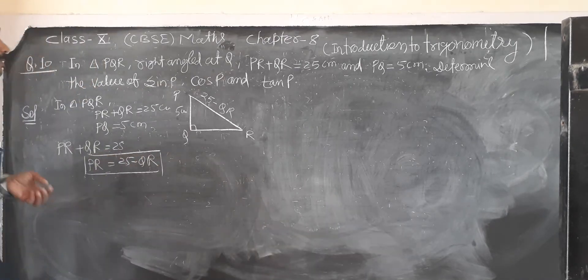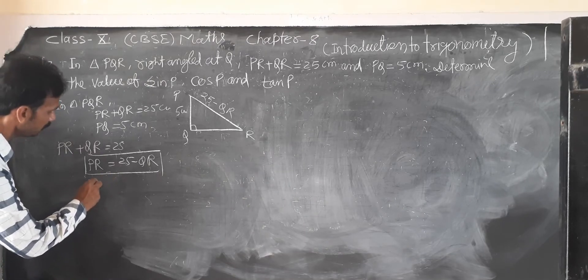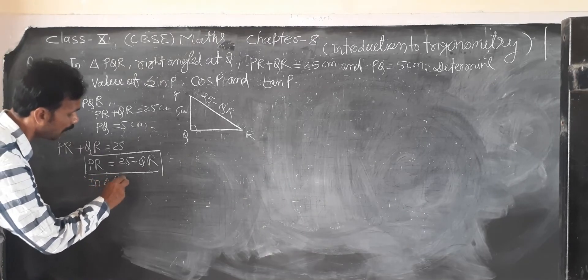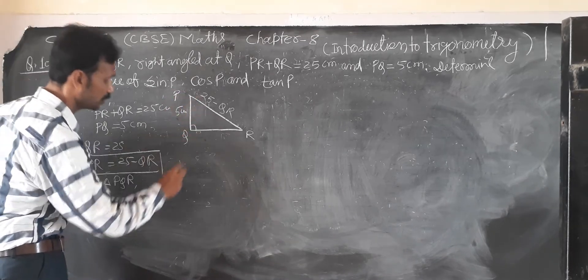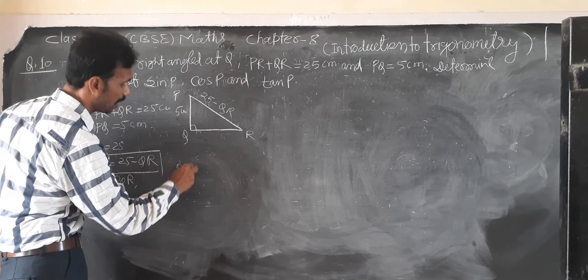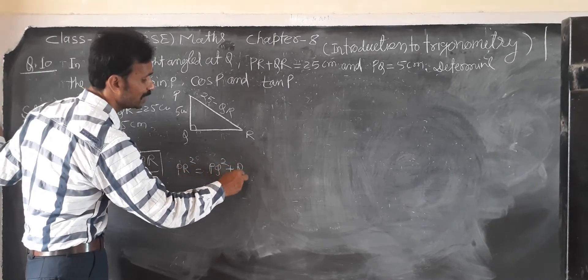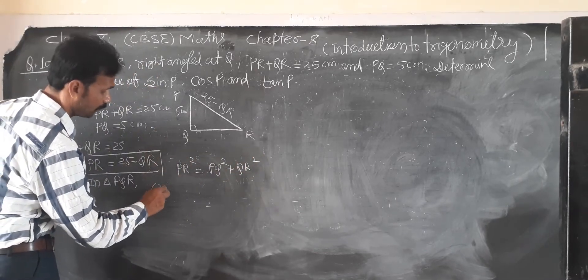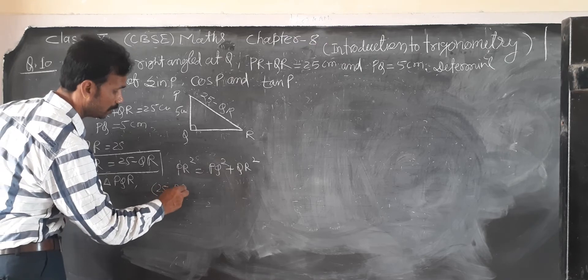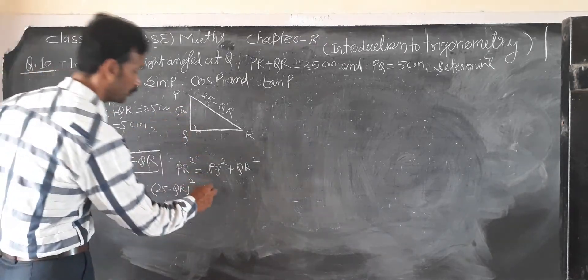We know that in triangle PQR, solve by Pythagorean theorem. PR square equal to perpendicular plus base square. PR square means 25 minus QR whole square equal to PQ 5 square plus QR square.